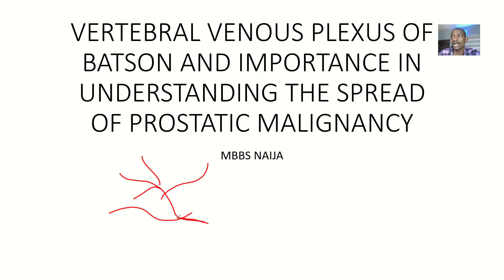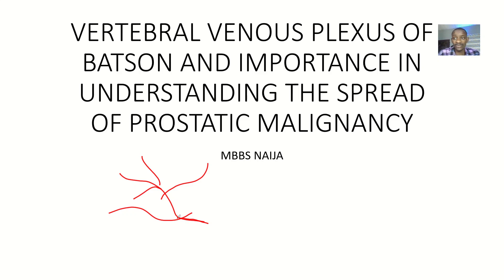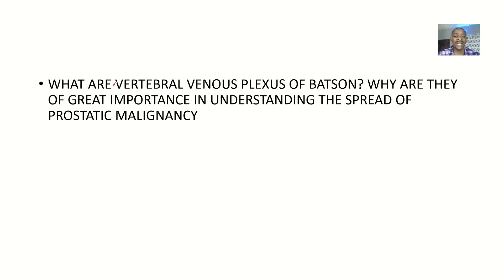Think of it this way — if someone is well-connected financially, the people connected to them also benefit. Similarly, once something enters one vein in a connected network, it reaches all the others. So the vertebral venous plexus of Batson — why is it of great importance in understanding the spread of prostatic malignancy?